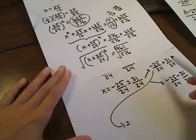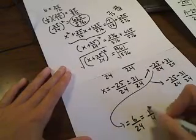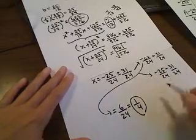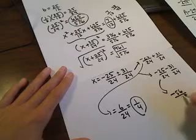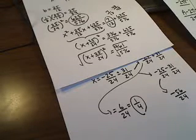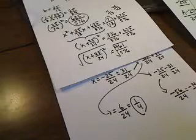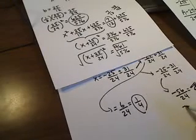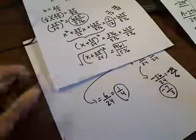So this one right here becomes, looks like 6 over 24, which reduces to be 1 fourth. And this one right here becomes a negative 56 over 24, which reduces, excuse me, looks like negative 14 over 6. That reduces even more. So it looks like 8 goes into both of these, negative 7 over 3. So there would be your two solutions there.